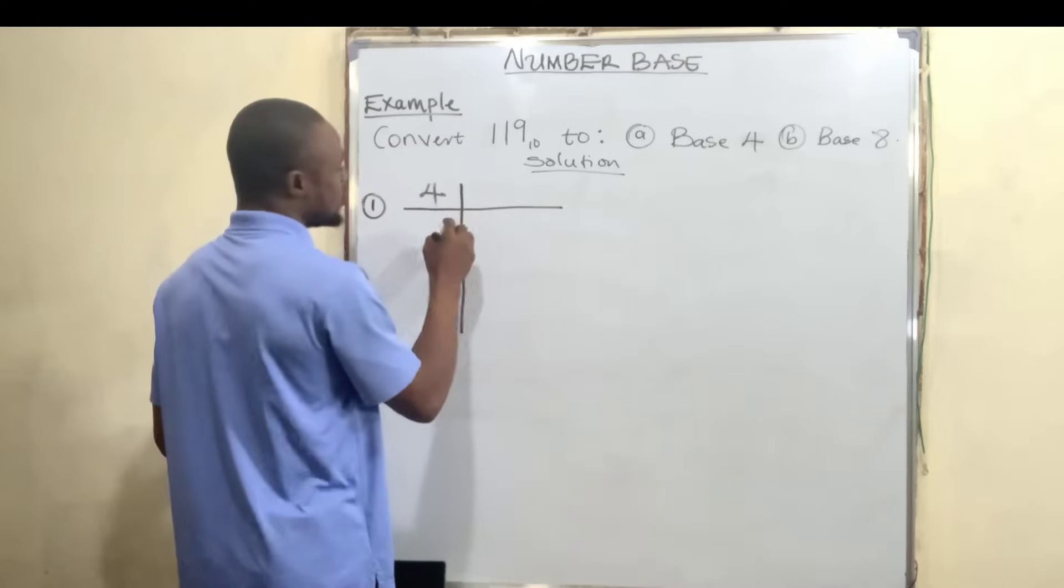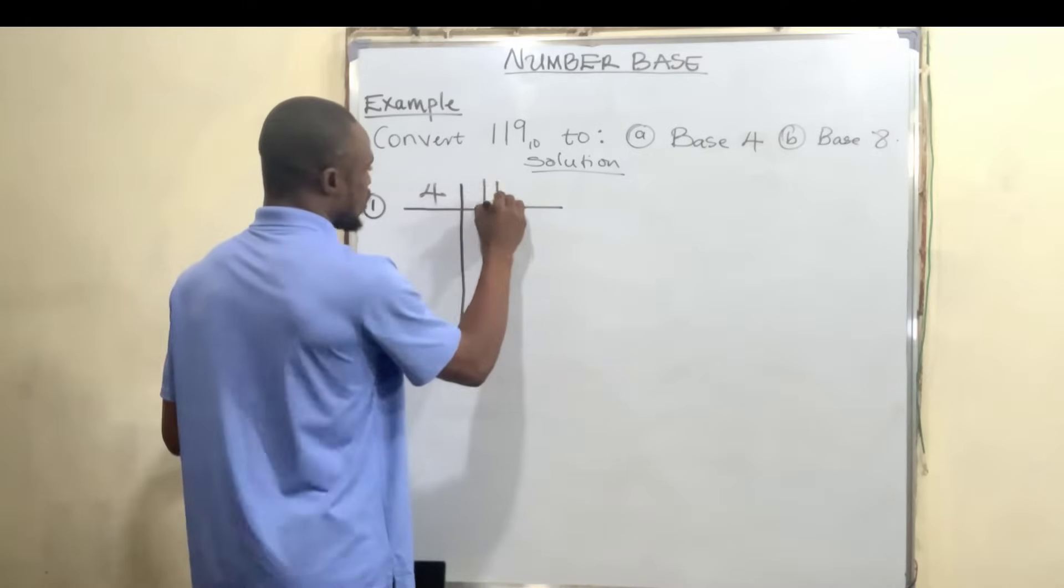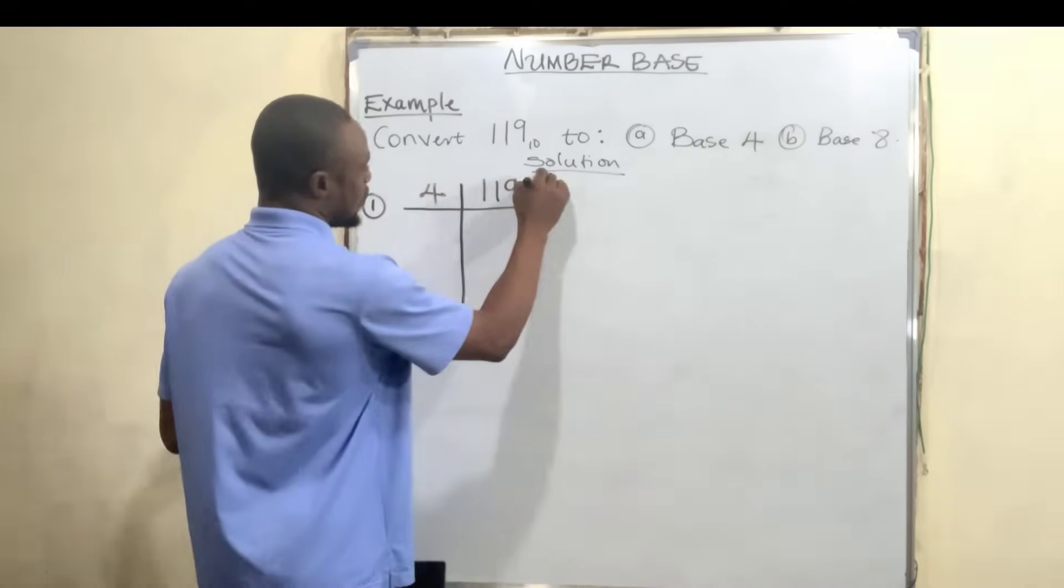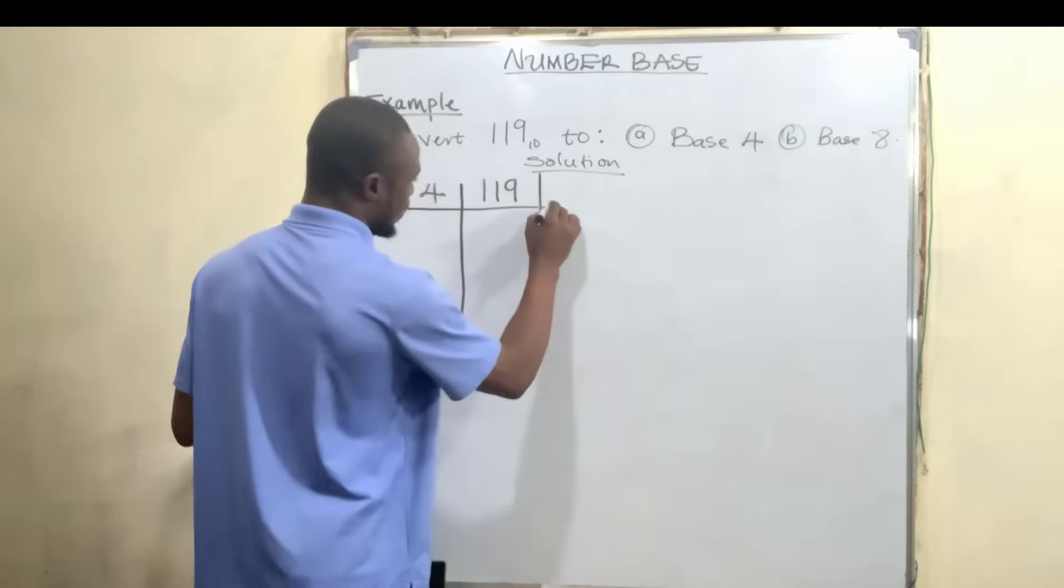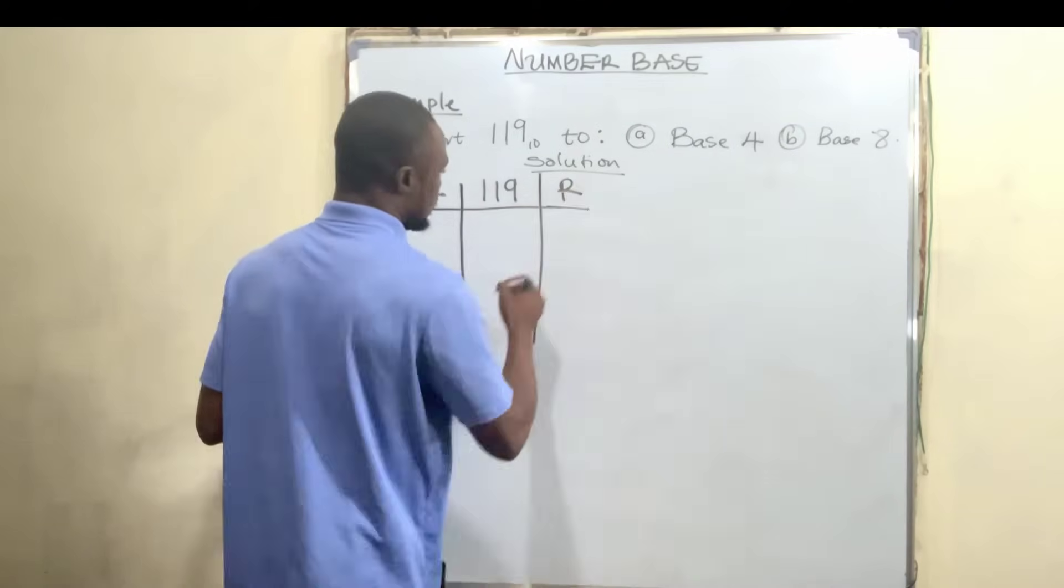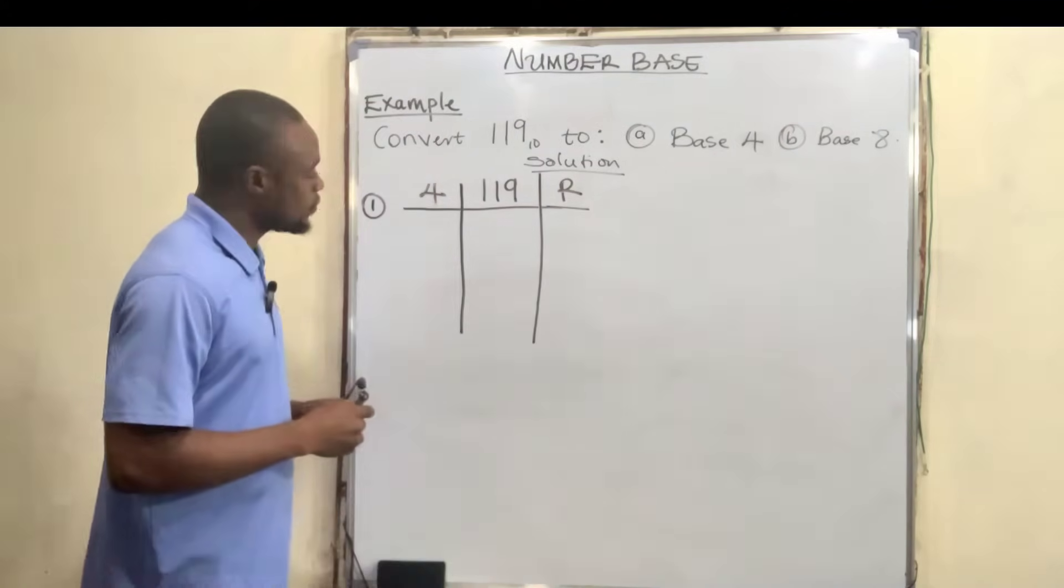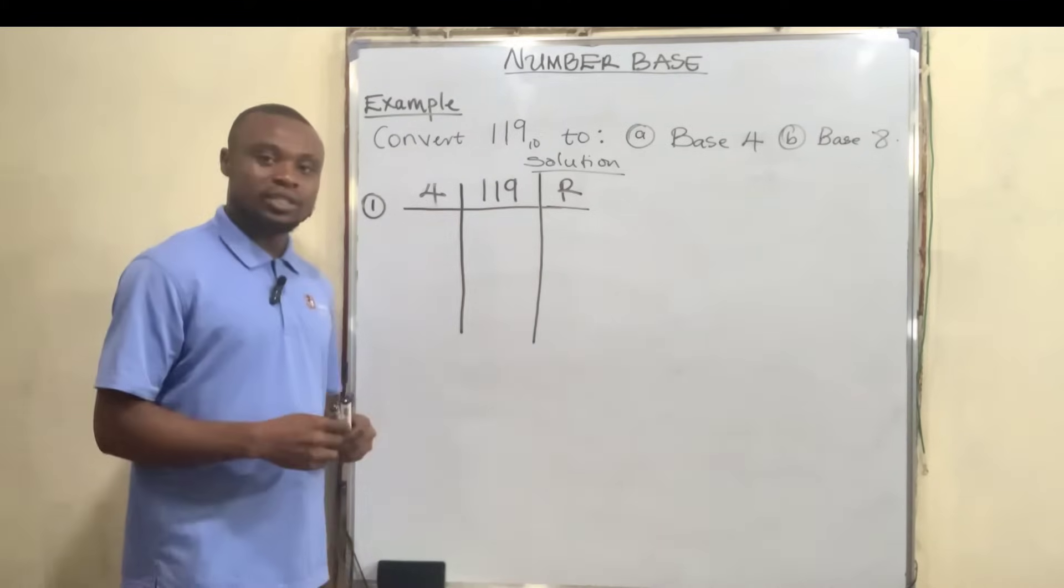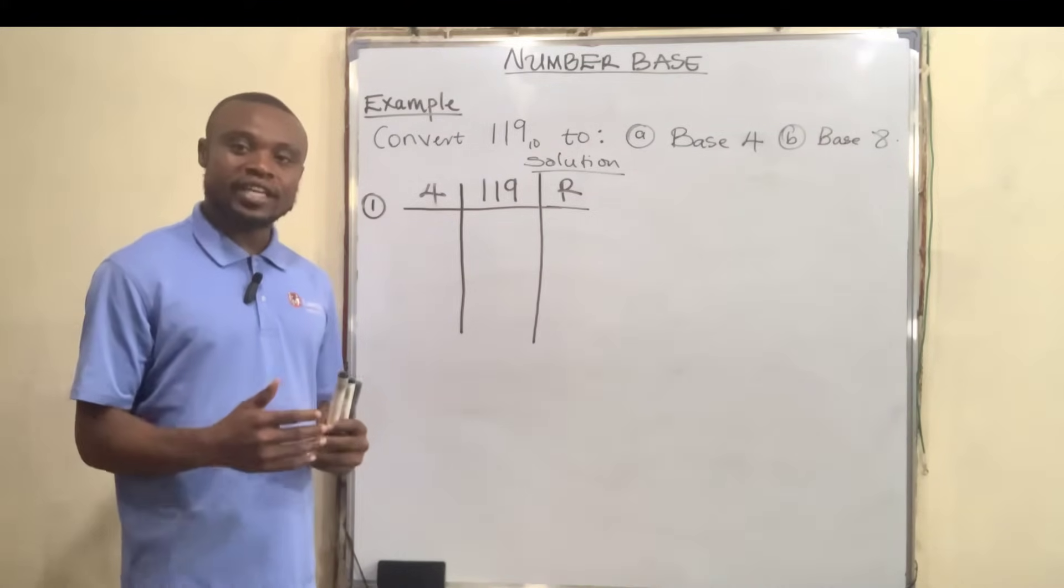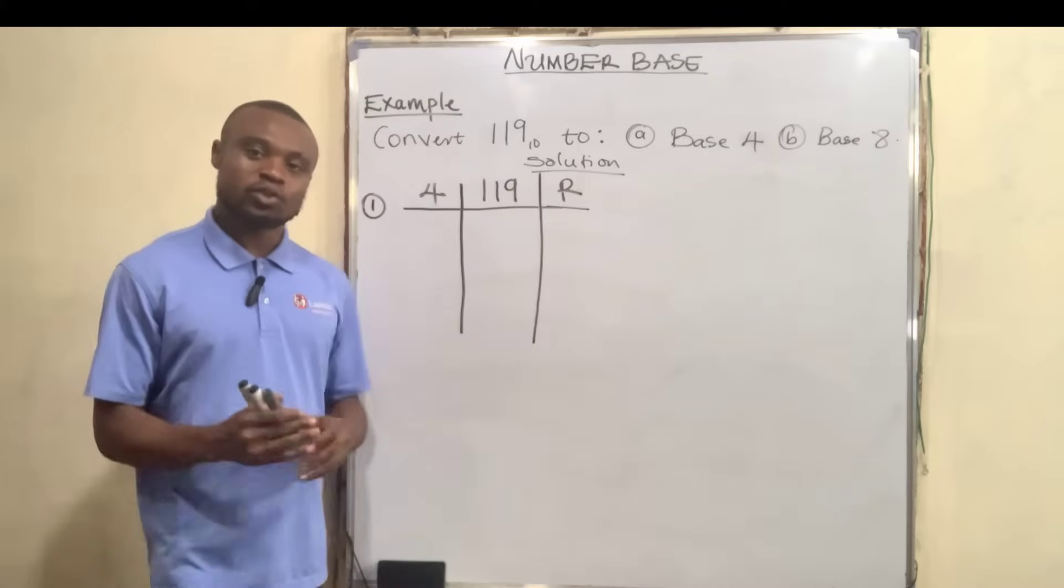Draw a line and write our new base, which is 4, and our number which is 119. Draw a line again and write down a remainder here.